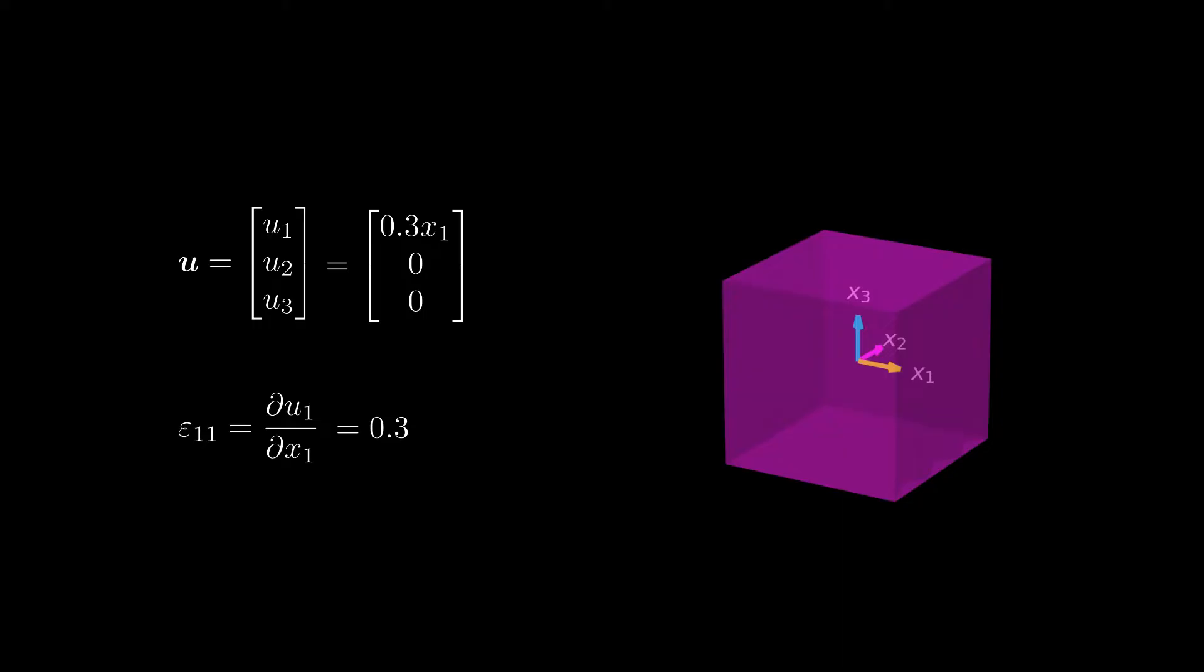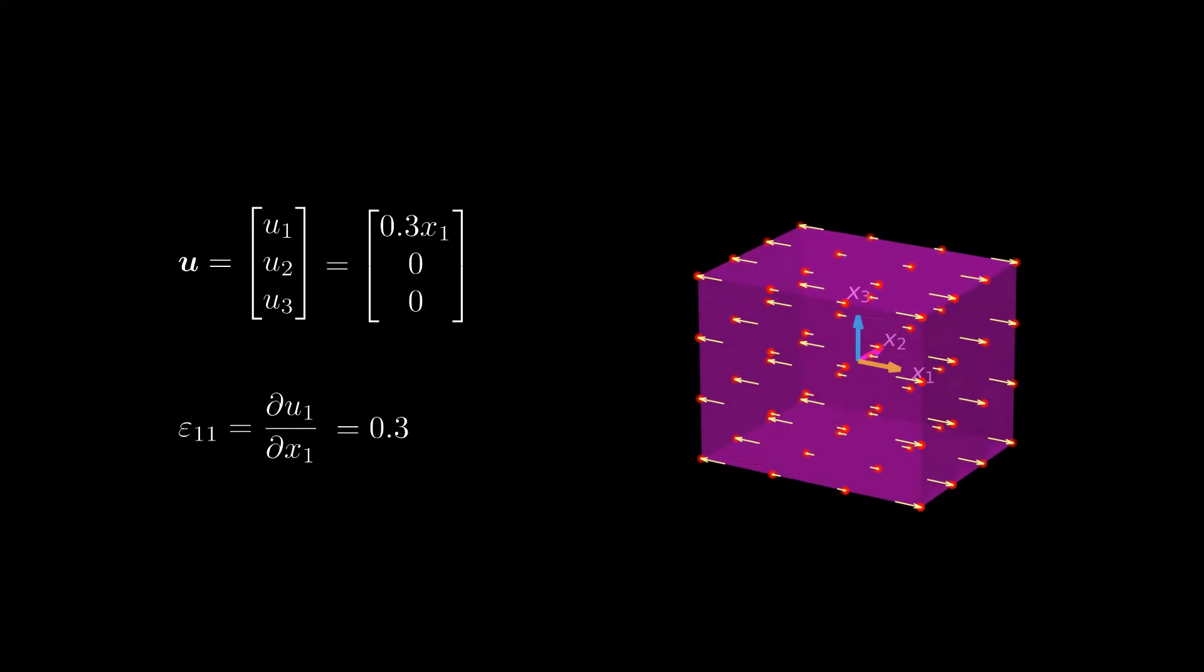We can illustrate the displacement field over the infinitesimal element and we can illustrate the resulting deformation. We observe that the element elongates in x1 direction. A value of 0.3 for epsilon 11 means that the element elongates by 30%.